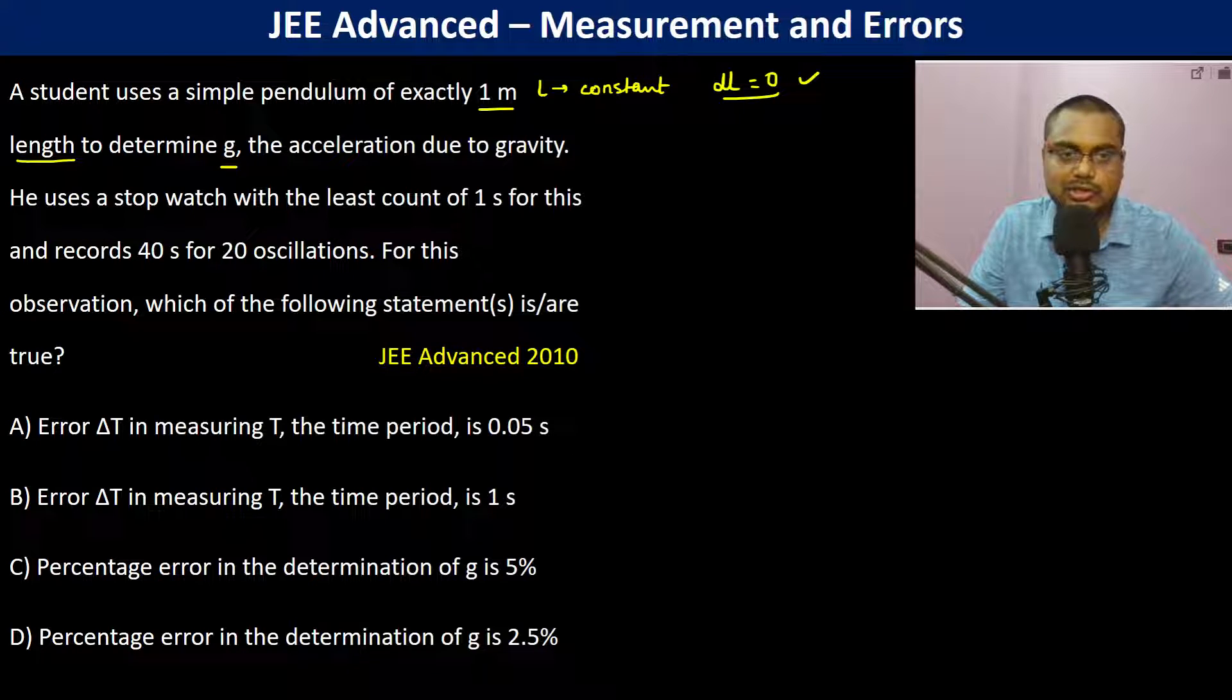To determine g, the acceleration due to gravity, he uses a stopwatch with the least count of 1 second. This records 40 seconds for 20 oscillations.